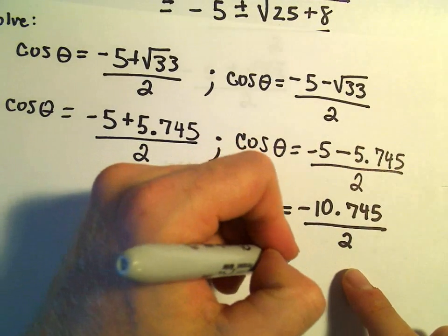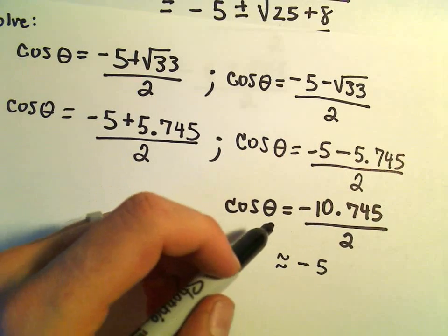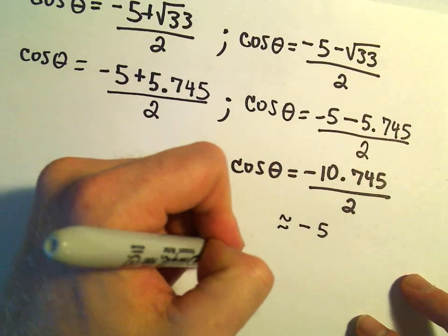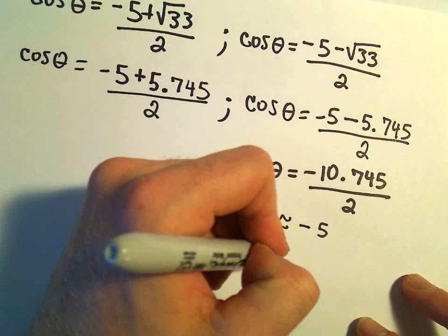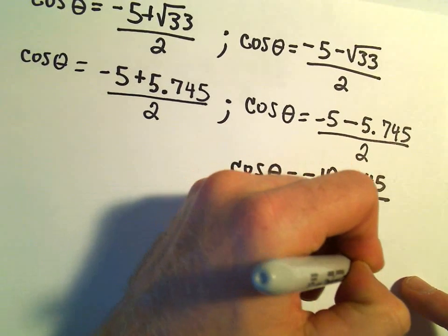That's roughly equal to negative 5, a little more than negative 5. Let's do it exactly. 10.745 divided by 2, so this says cosine of theta would have to equal negative 5.3725.